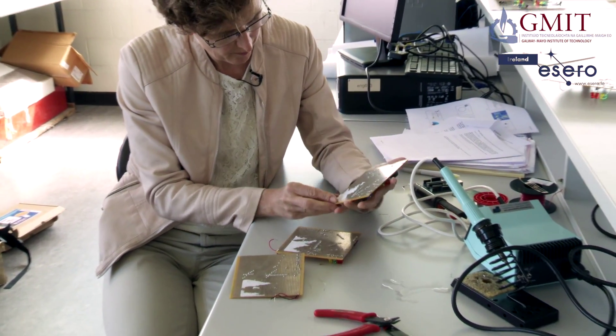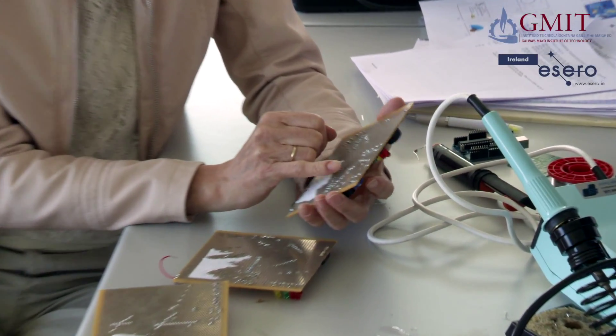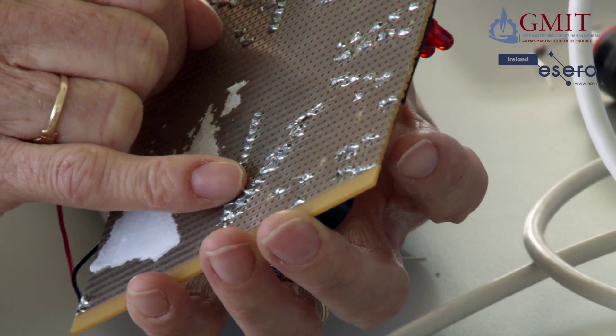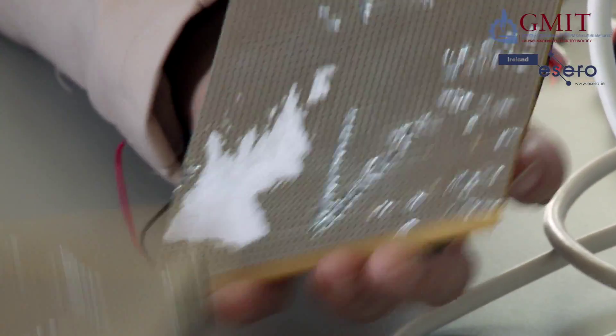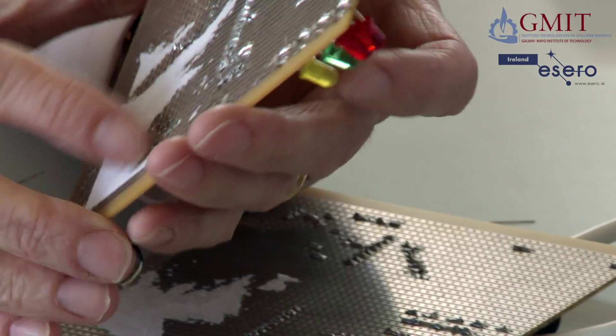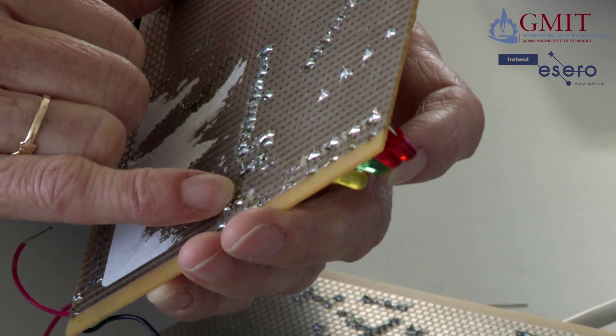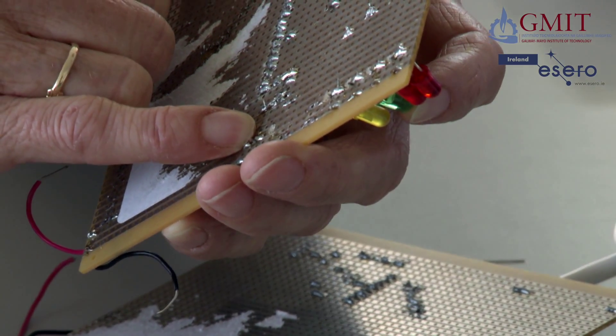There's a couple of examples here just of where things go wrong. So you might see these. So if your joints are dull or bumpy like those ones, or here's another example, they're not good solder joints. So the problem, or that one there, you see there's kind of a hole around the component leg.